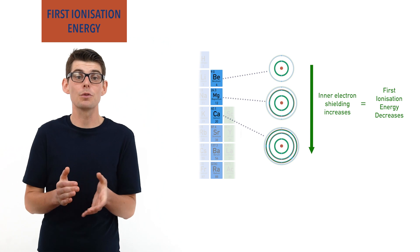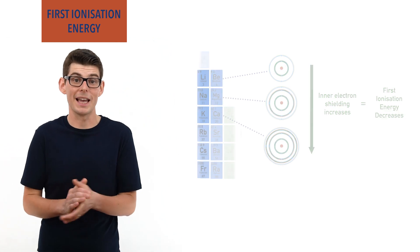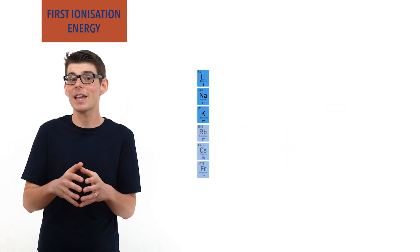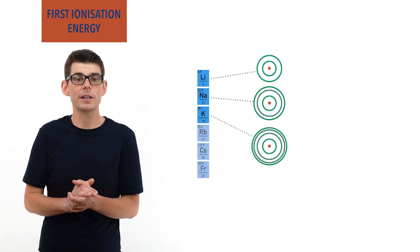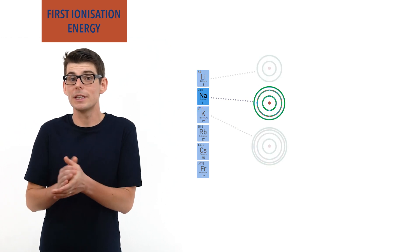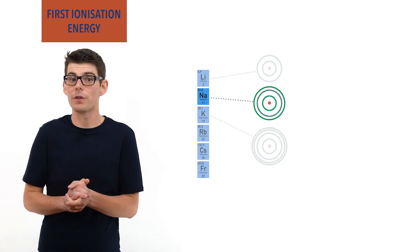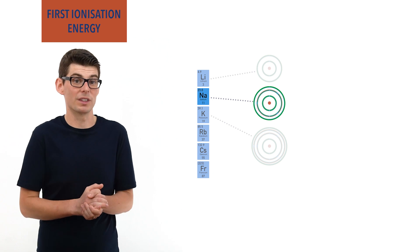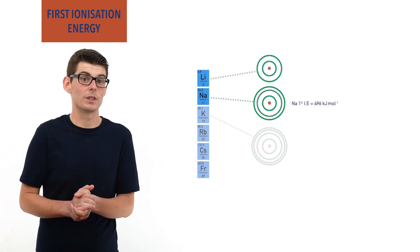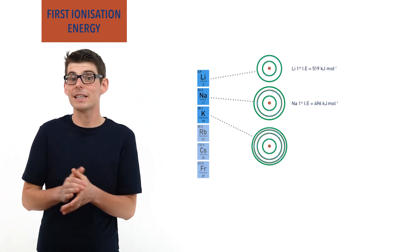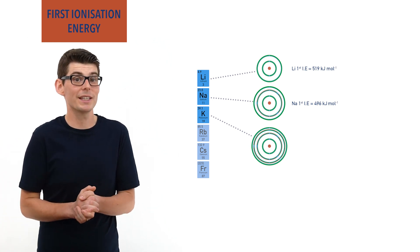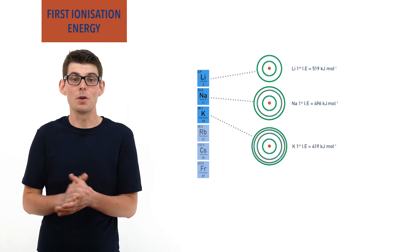For example, down group 1 with the alkali metals, we can see how as the atoms get larger their first ionization energies decrease, with sodium having a lower first ionization energy than lithium at 519 kJ/mol, and potassium having a lower first ionization energy than both of them.